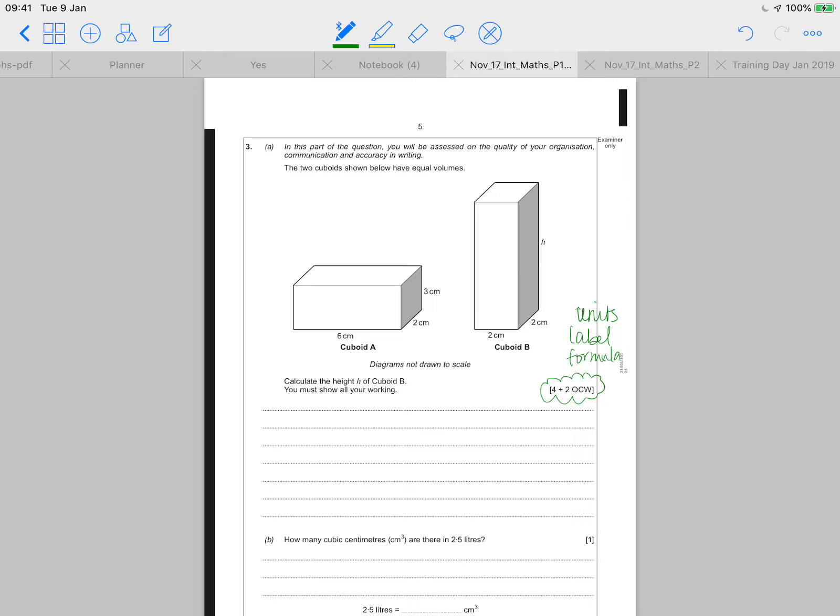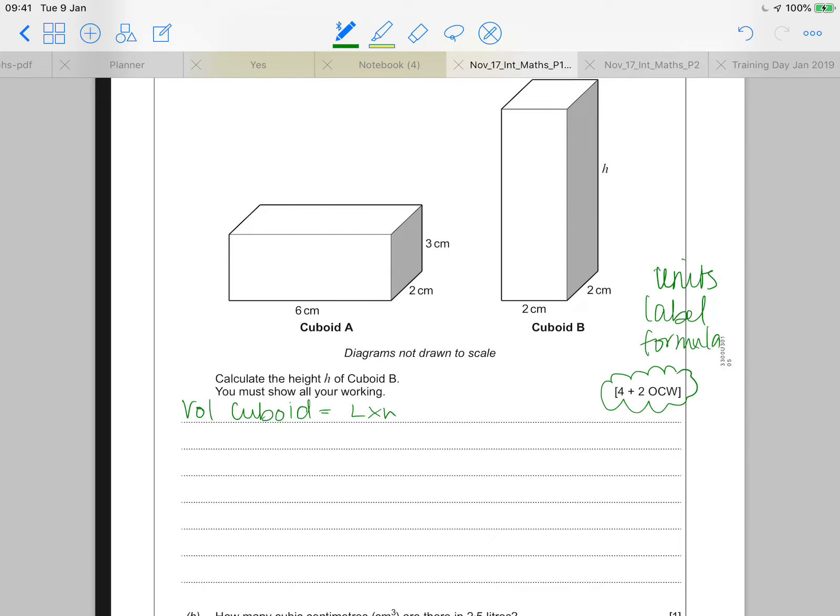It says the two cuboids shown have equal volumes. So although they look different, the answer for the volume of this one would be exactly the same as the volume of that one. So we're looking at volume and volume of a cuboid equals the length times the width times the height. So for cuboid A, where I have all three numbers, I can say that the volume equals 6 times 2 times 3.